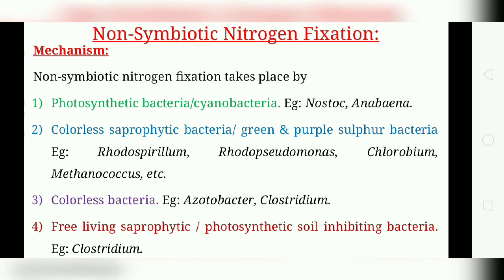Now for the mechanism of non-symbiotic nitrogen fixation: most algae fix nitrogen only under micro-aerobic conditions — for example, Plectonema, Oscillatoria, and Trichodesmium are able to fix nitrogen under micro-aerobic conditions. Only a few strains of Gloeocapsa fix nitrogen in aerobic conditions, while other strains perform nitrogen fixation under anaerobic conditions.